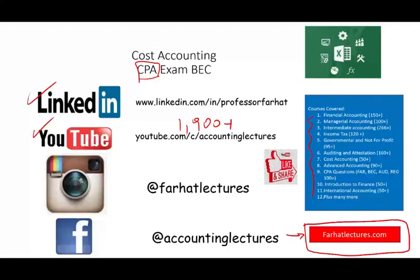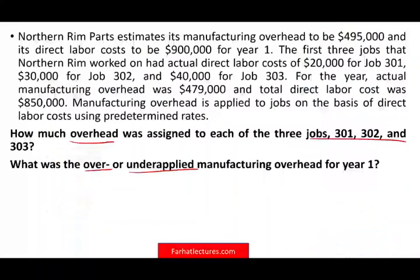Let's take a look at this problem. Northern Rim Parts estimates — and that first word 'estimates' is important — its manufacturing overhead to be $495,000 and its direct labor cost to be $900,000. Those are all estimates for year one.